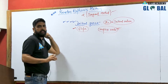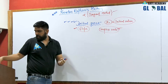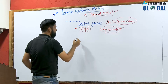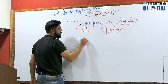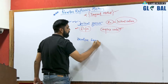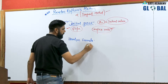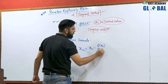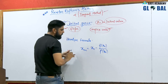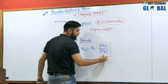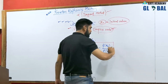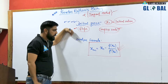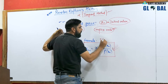It is really sensitive about the initial guess and also referred to as the tangent or slope method. The iterative formula is: x_(n+1) = x_n − f(x_n) / f'(x_n). This is the iterative formula for the Newton-Raphson method.